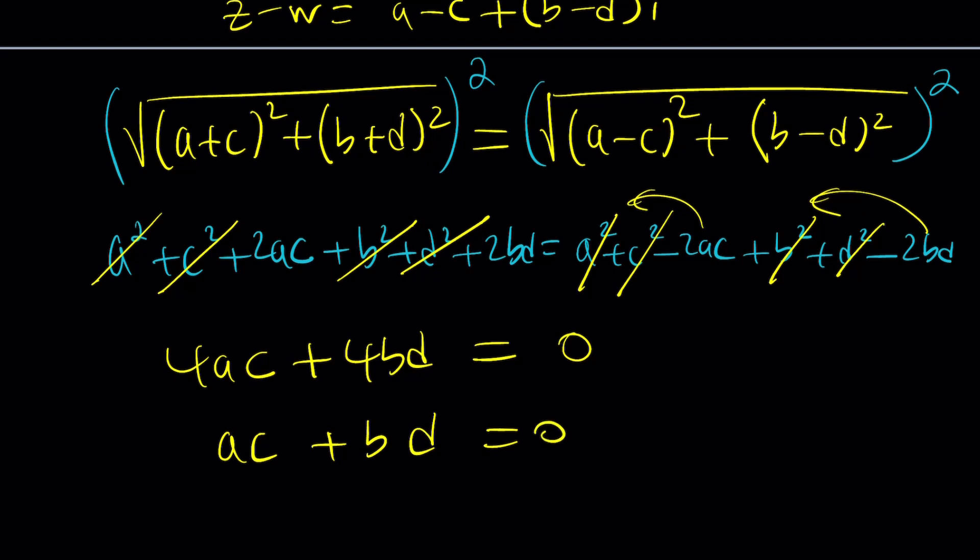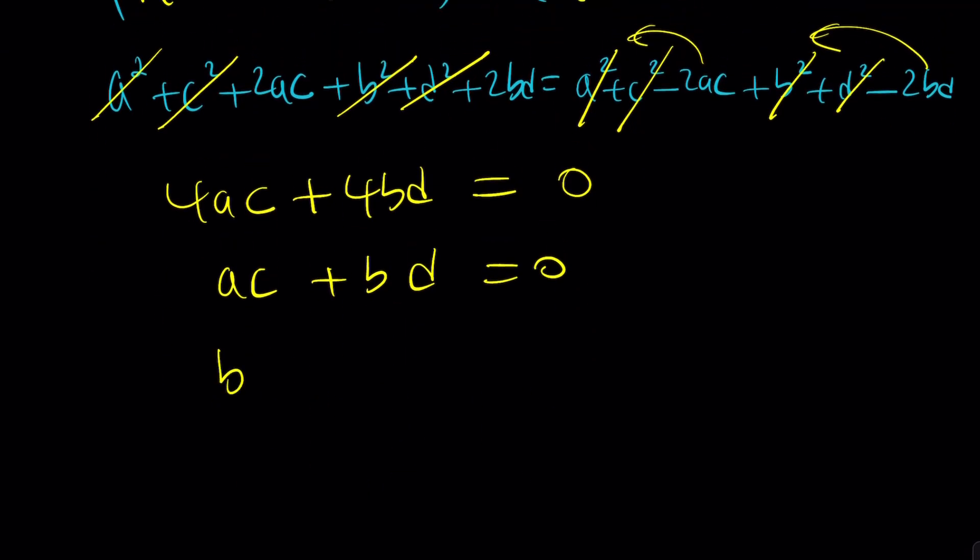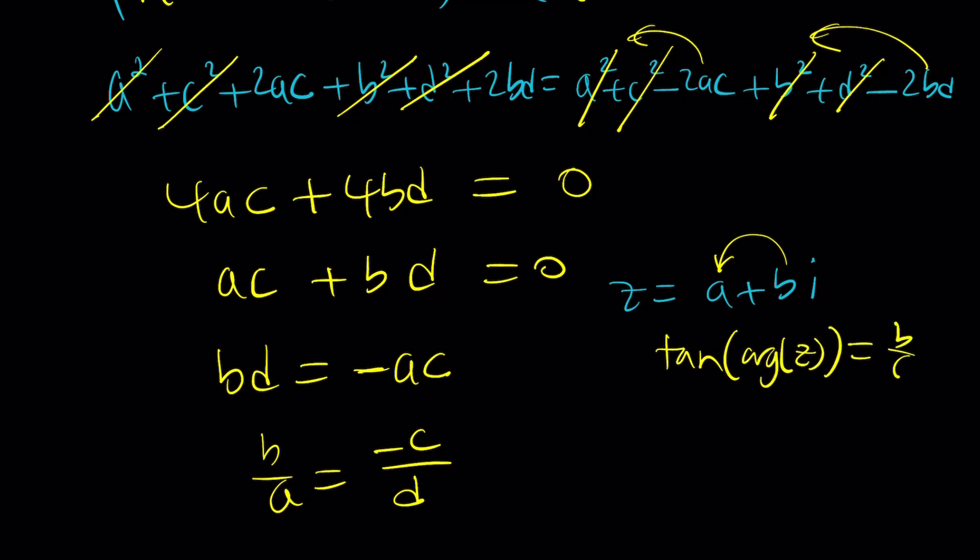But what is that supposed to mean? Let's write this differently. I want to write this as bd equals negative ac, and then I'm going to divide b by a, leave the negative sign with the c, and divide that by d. So it becomes b over a equals negative c over d. Now b over a has a meaning. Remember, we said z equals a plus bi. So what does b over a give you? If you said tangent, you got it. The tangent of argument of z is given by b over a.